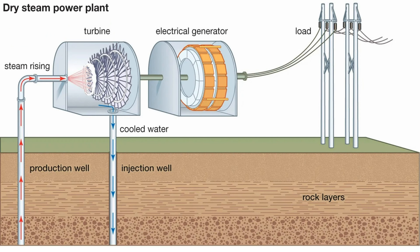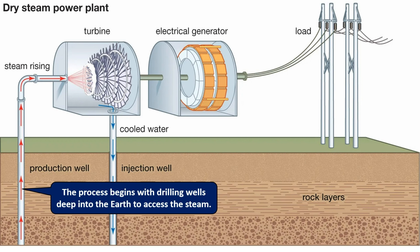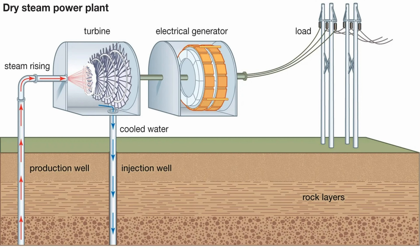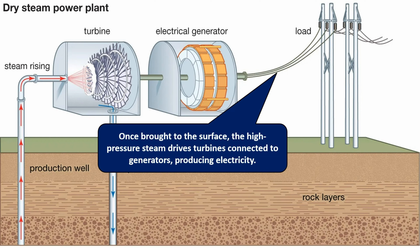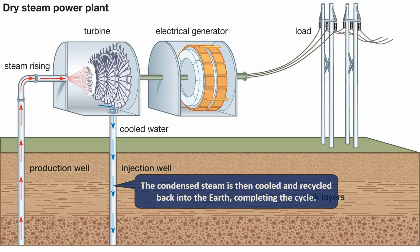This is how dry steam power plants work. The process begins with drilling wells deep into the earth to access the steam. Once brought to the surface, the high-pressure steam drives turbines connected to generators, producing electricity. The condensed steam is then cooled and recycled back into the earth, completing the cycle.